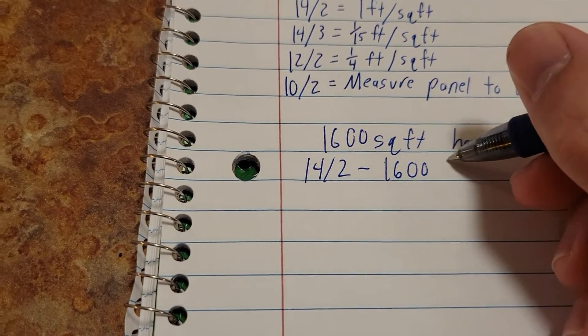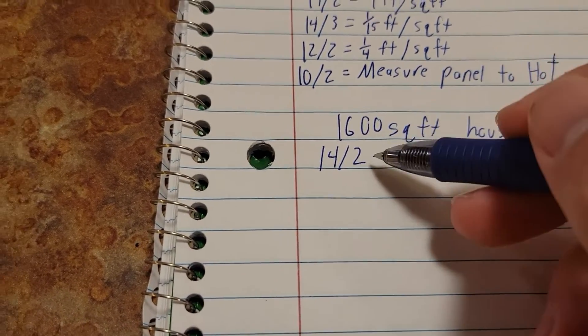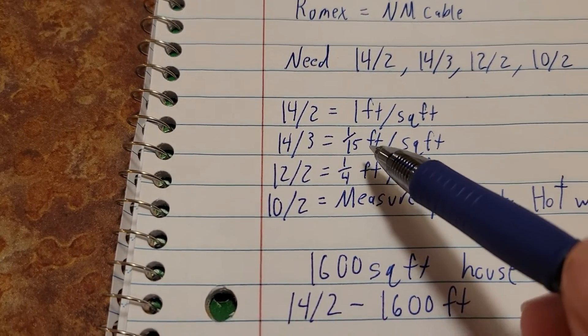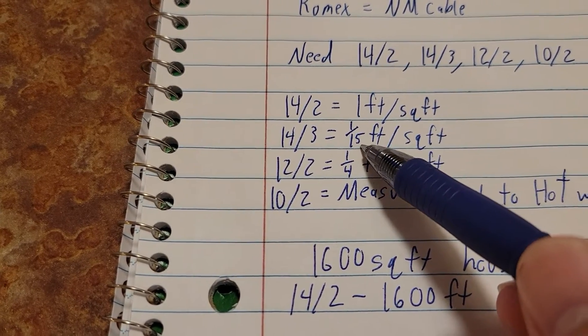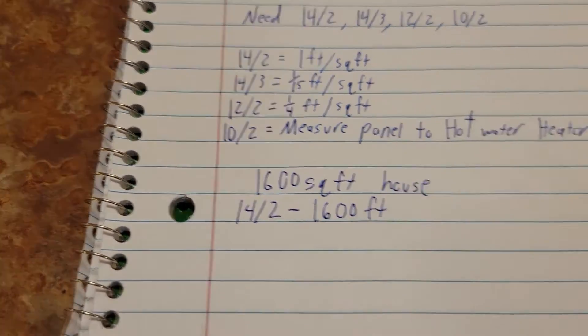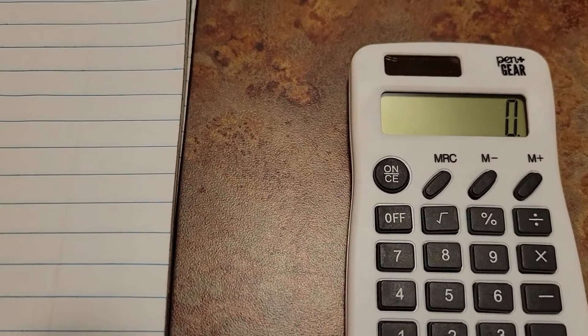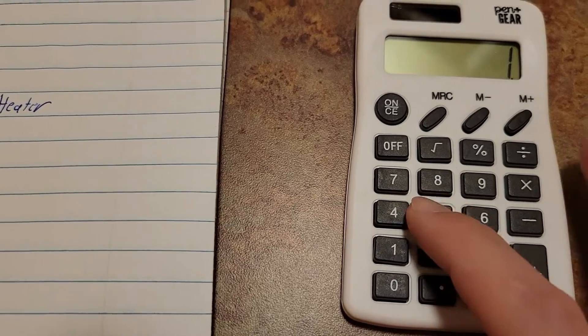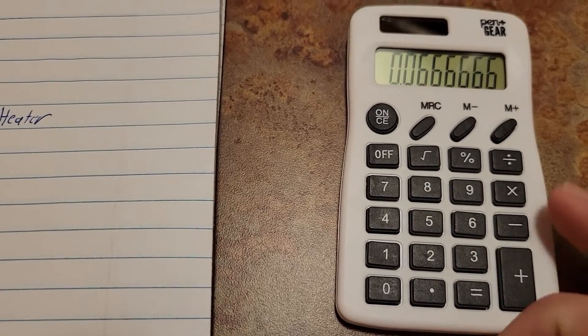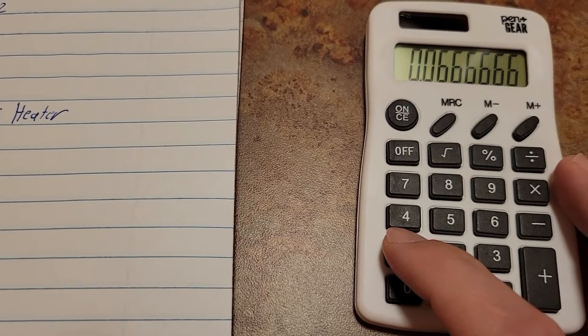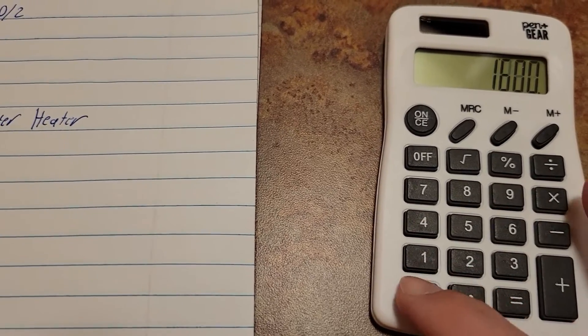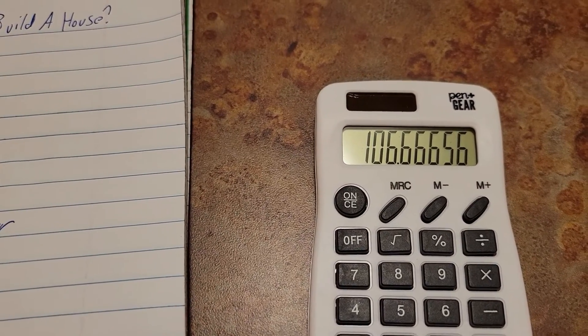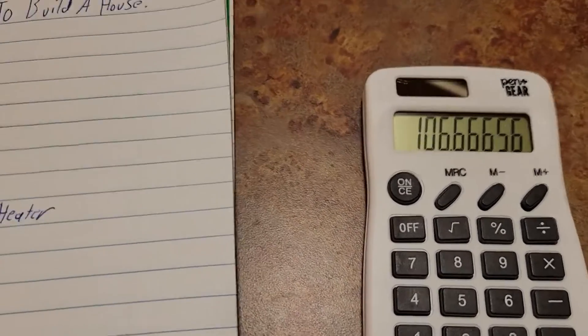Now our 14/3 - we're going to multiply 1/15th of a foot per square foot. So we'll come over here to our calculator, turn it on, and we'll enter 1 divided by 15, and then we're going to multiply that by 1600 square feet. That's going to give us 106.66656.